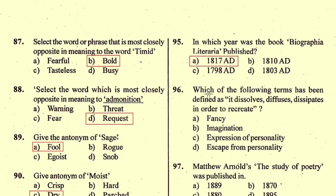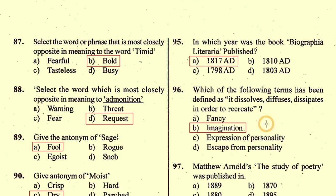Question number 96: Which of the following terms has been defined as 'it dissolves, diffuses, dissipates in order to recreate'? This refers to Coleridge's secondary imagination. The right option is B, imagination.